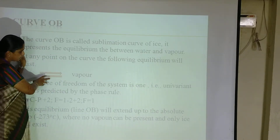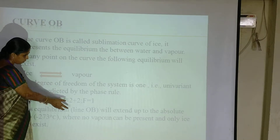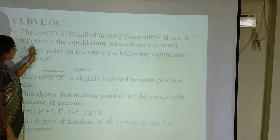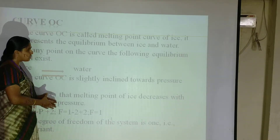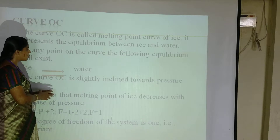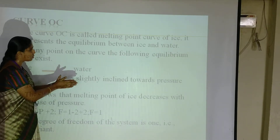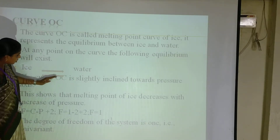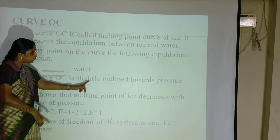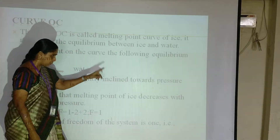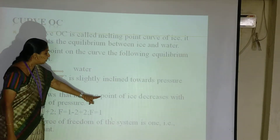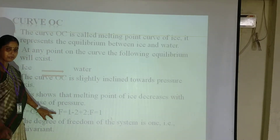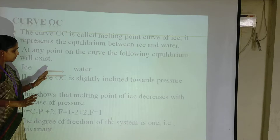Curve O-C is the fusion or melting point curve, where solid ice is converted into liquid. In this state the temperature is increased and there is equilibrium between ice and water. This curve is slightly inclined towards the pressure axis — when the pressure is increased, the melting point of ice is decreased. Here the degree of freedom is 1. So in all the curves the degree of freedom is 1.